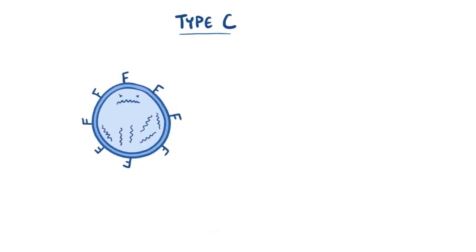Finally, there's type C influenza, which only has one species, and is the least common and least likely to mutate of the three.